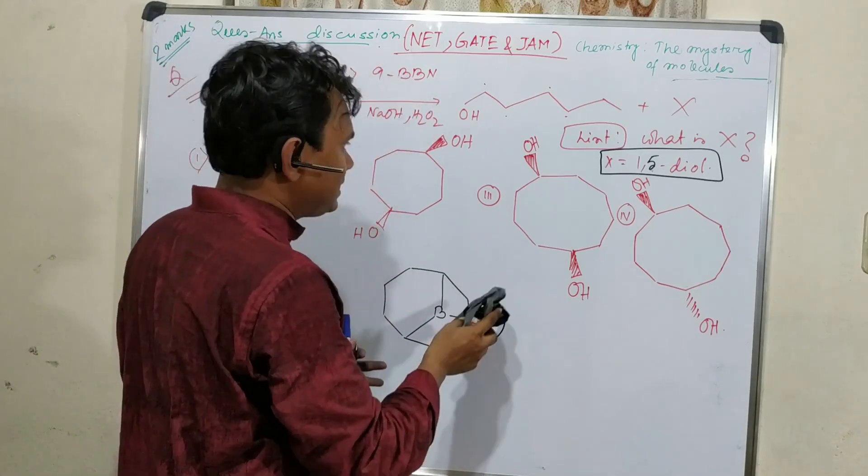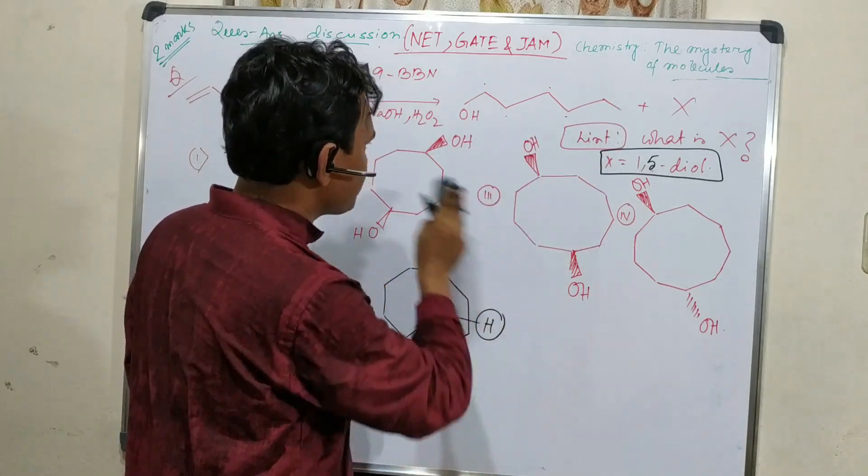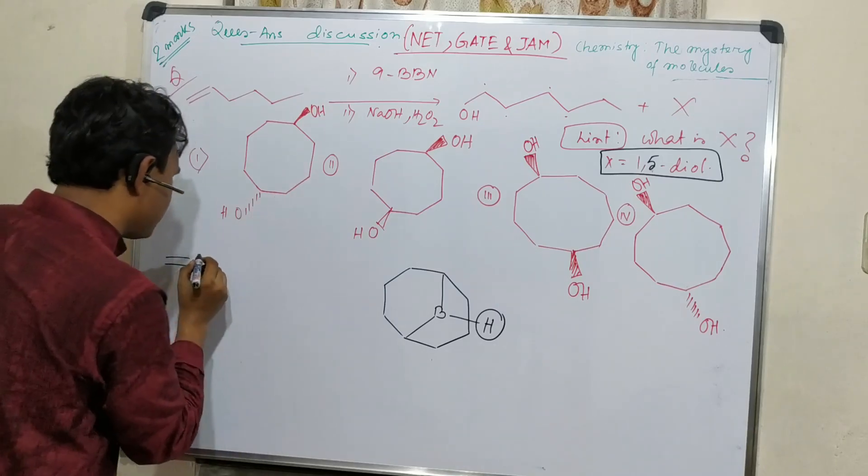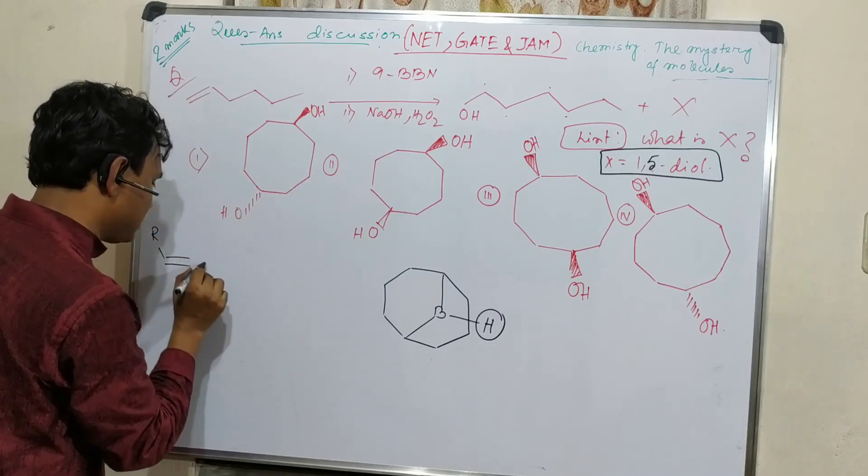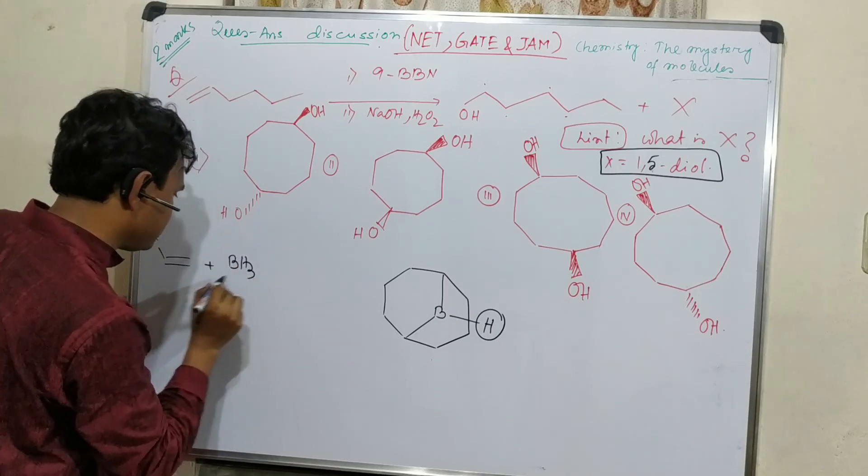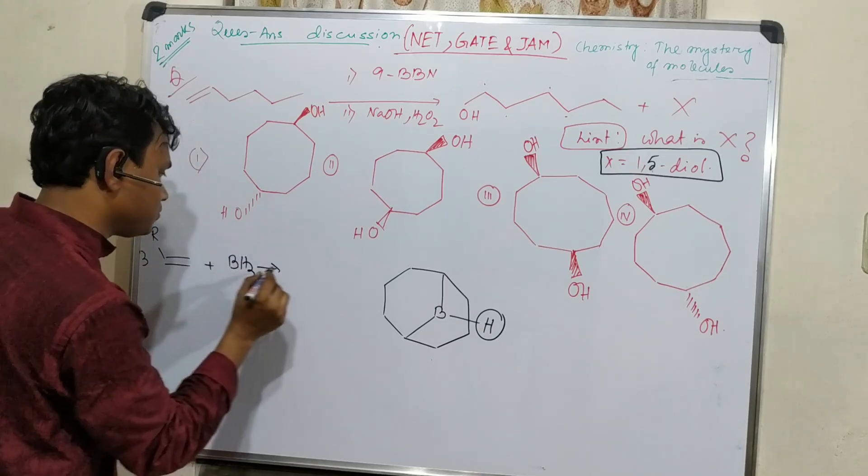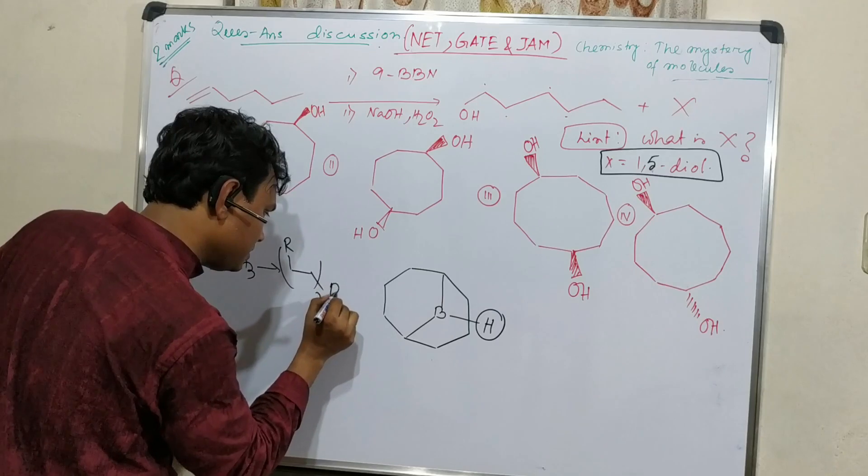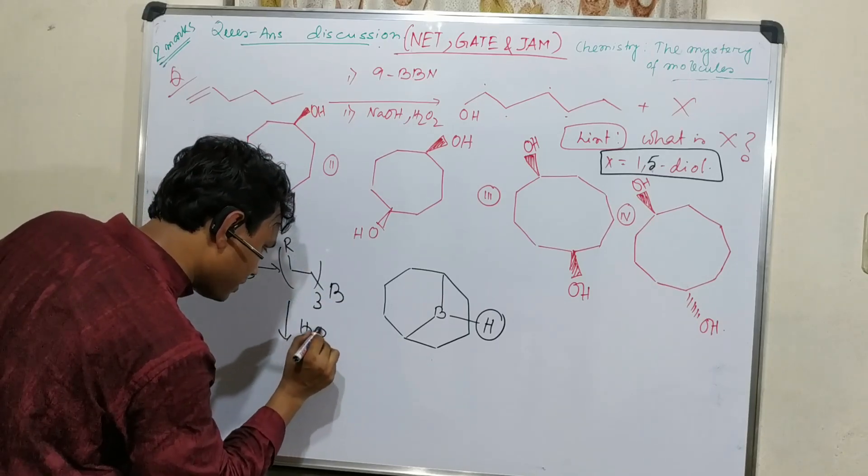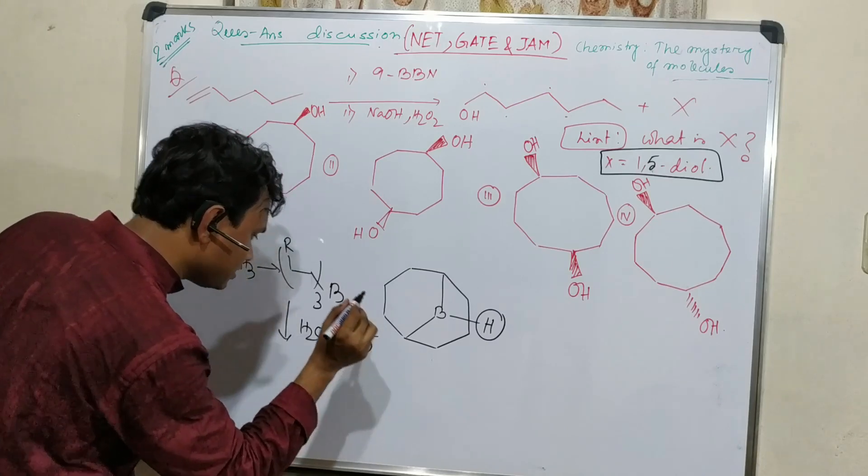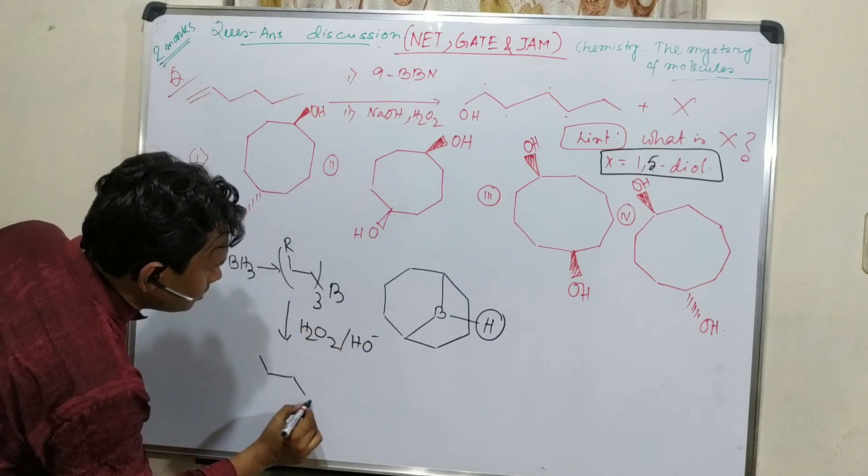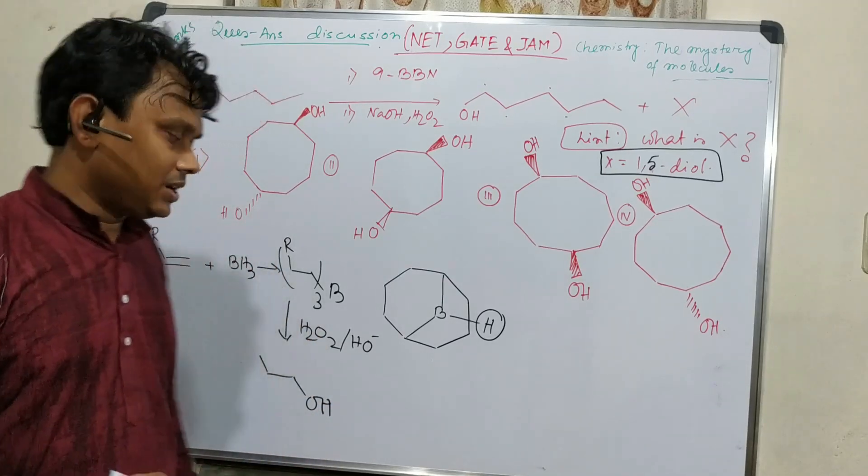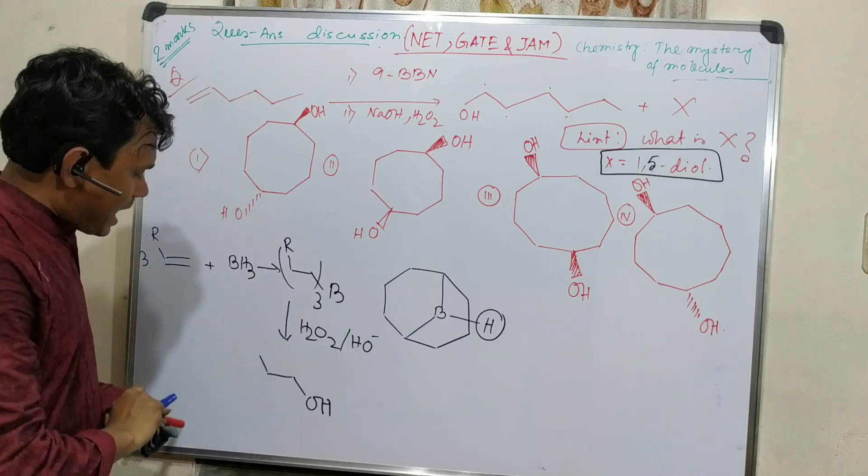Let me give a brief expression about hydroboration. If we have an alkene R, then BH3 reacts with three molecules to produce R3B, and it reacts with hydrogen peroxide and sodium hydroxide to produce R-OH.